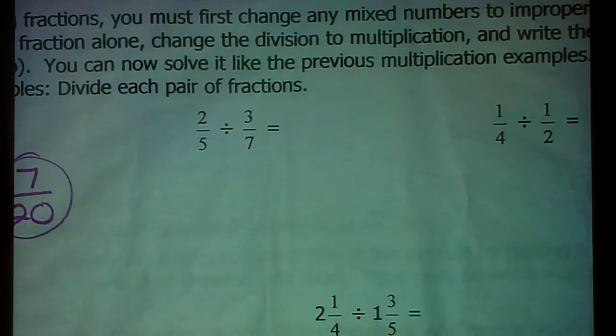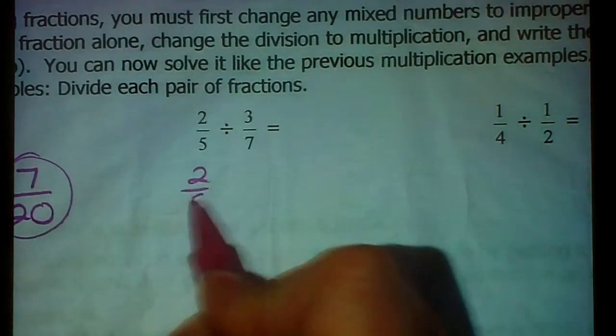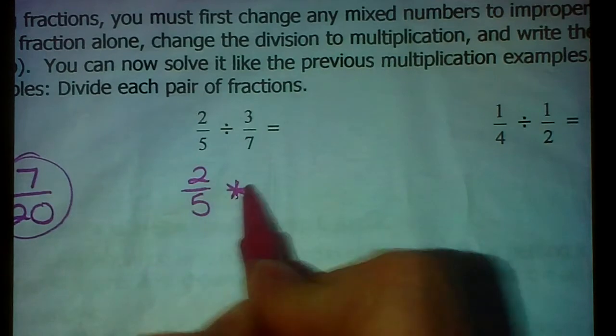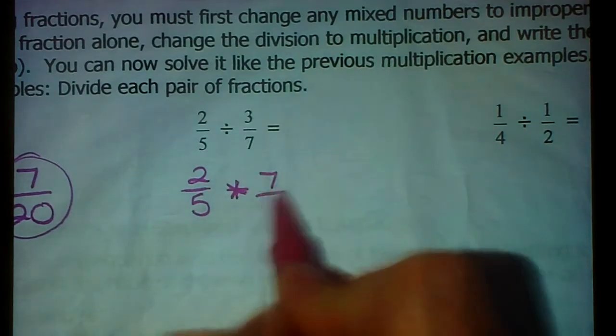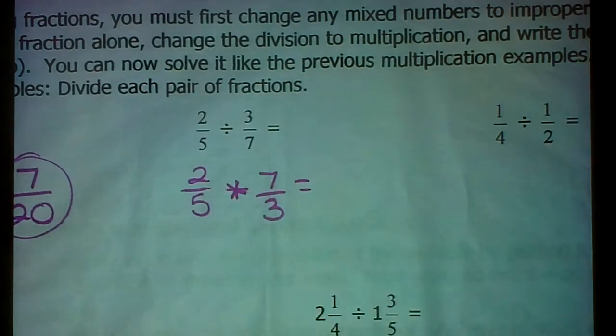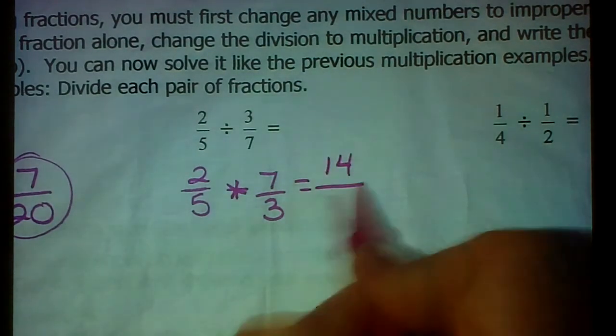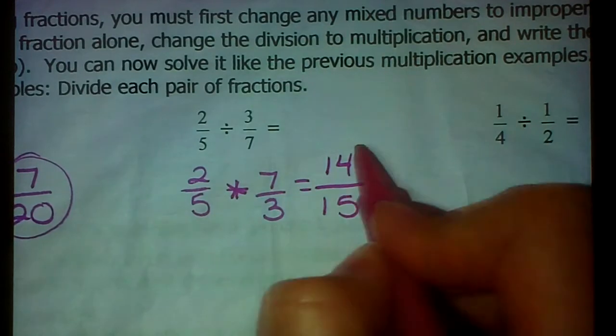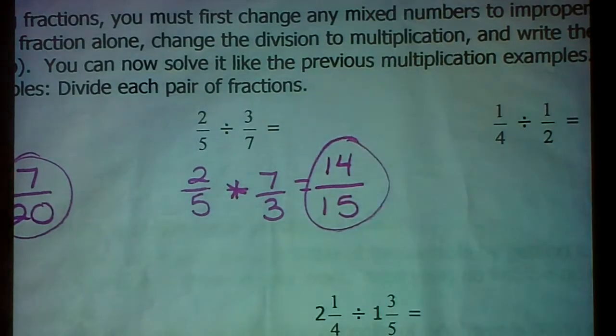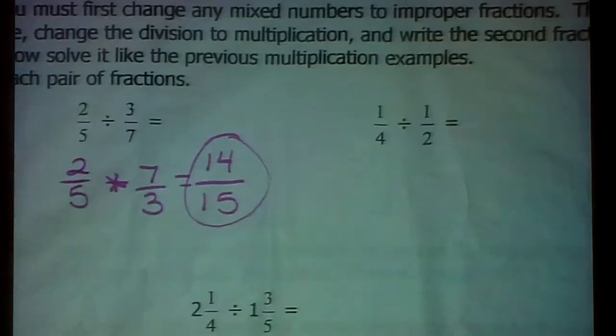Check out the next one. 2 fifths. We are going to keep that one. Switch to multiplication. Flip to the reciprocal. Now multiply straight across. 2 times 7 is 14. 5 times 3 is 15. That was nice and pretty. They don't have any common factors other than 1. Alright, how about the next one?